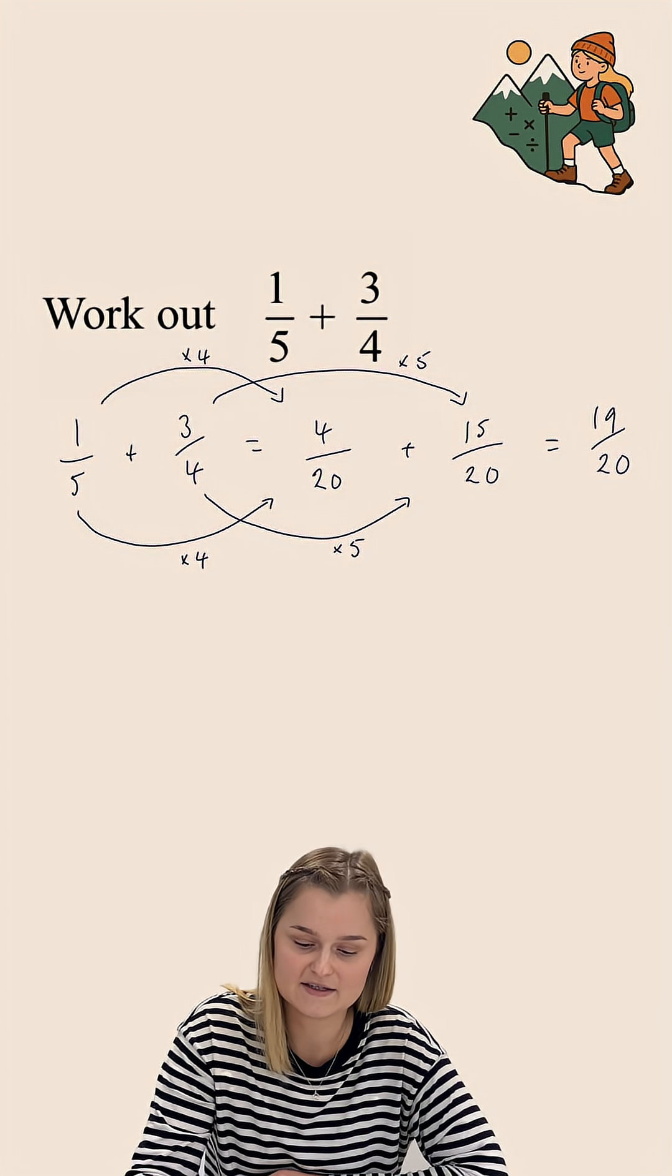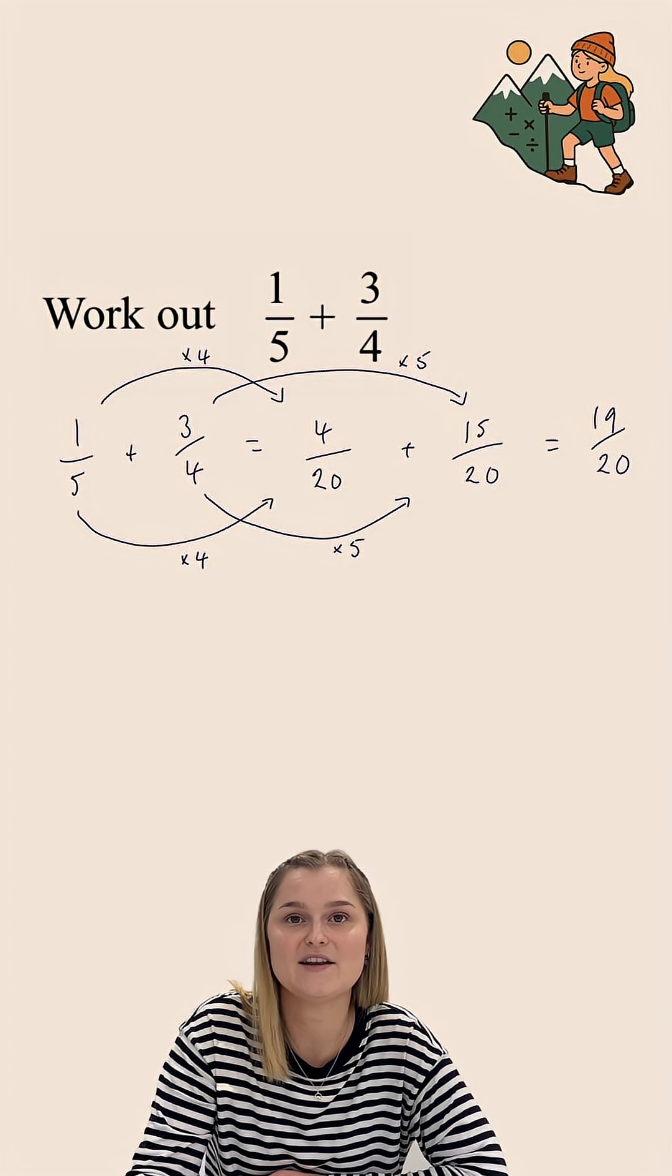So, 1 fifth plus 3 quarters gives us an answer of 19 over 20.